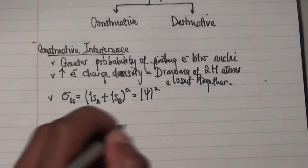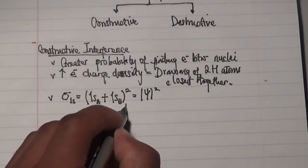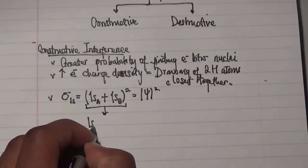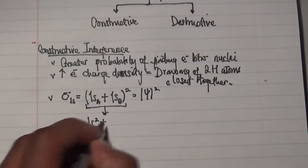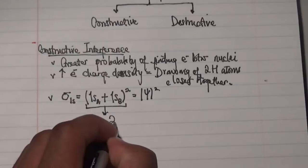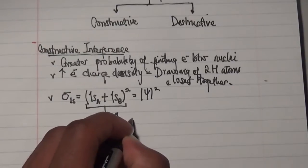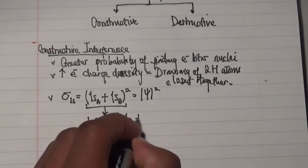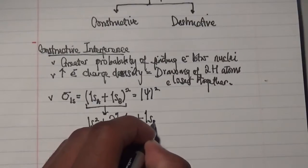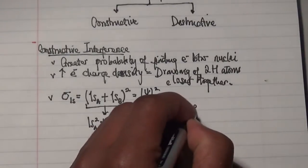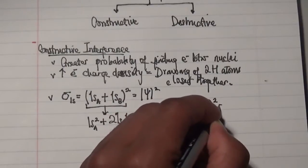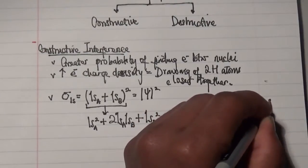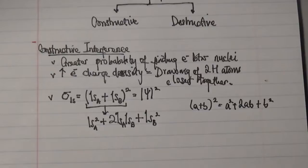Once you solve this particular mathematical function, what we get is 1s_A squared plus 2(1s_A)(1s_B) plus 1s_B squared. This is quite similar to the algebraic expression (a + b) squared equals a squared plus 2ab plus b squared — quite similar in terms of solving the operation.